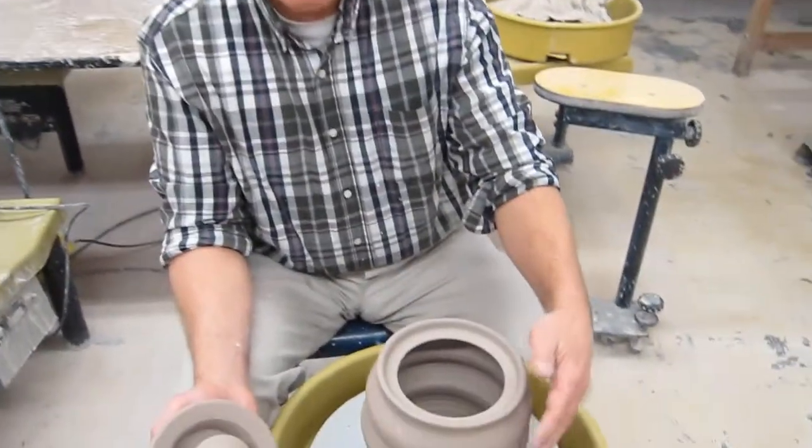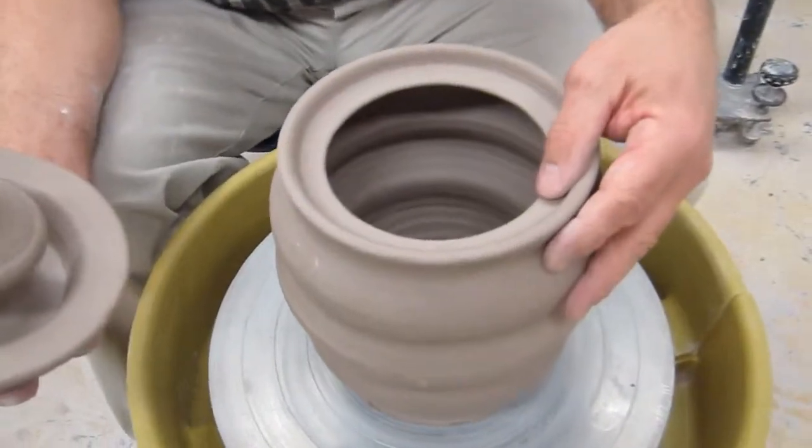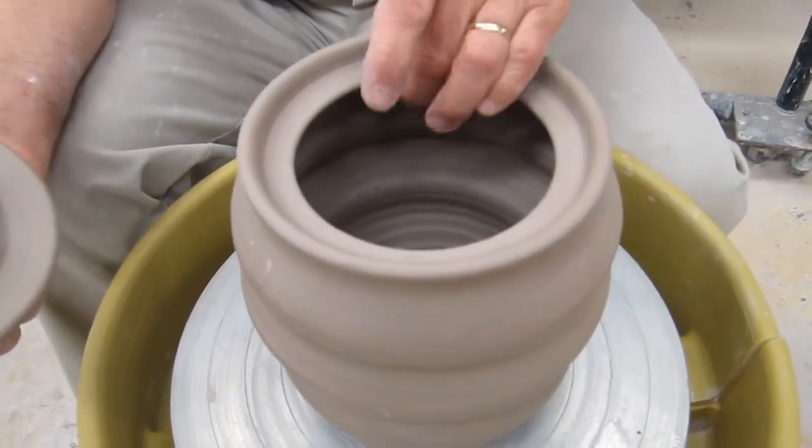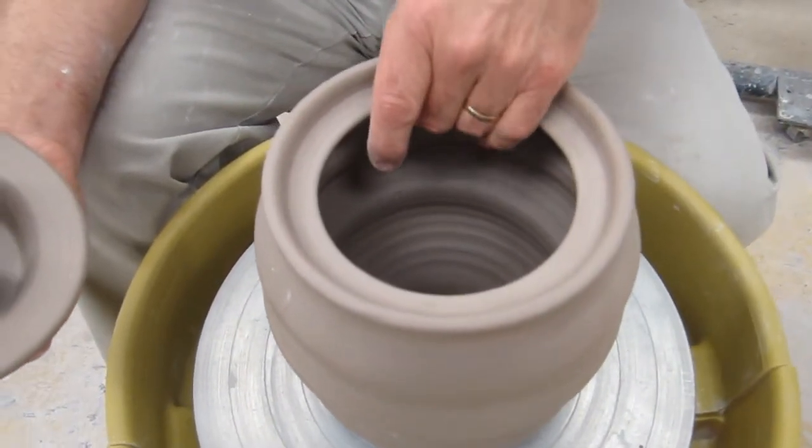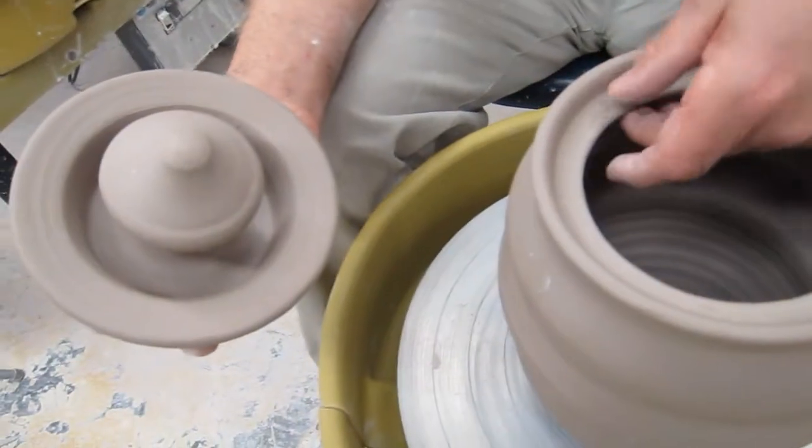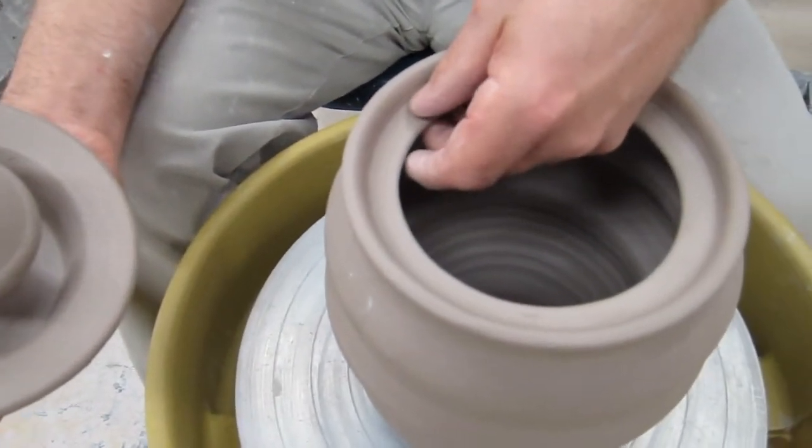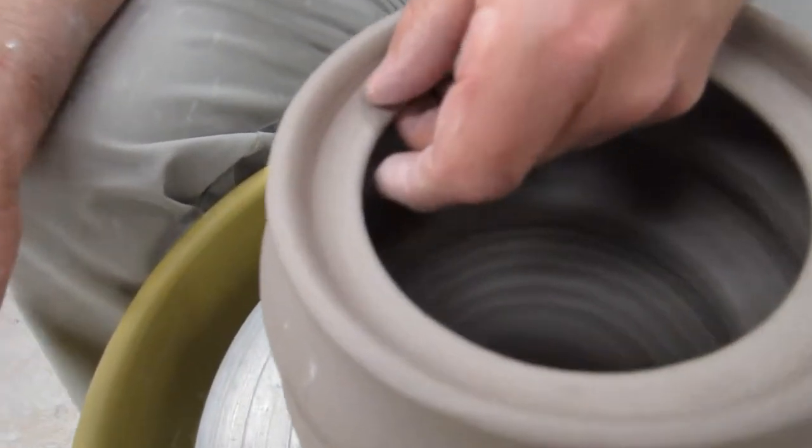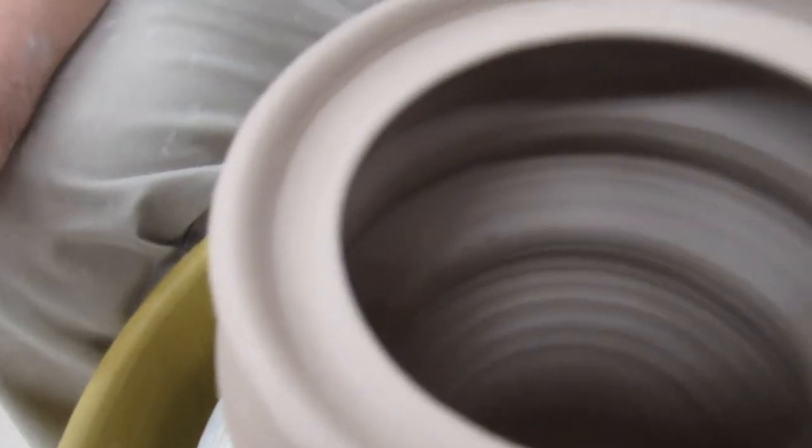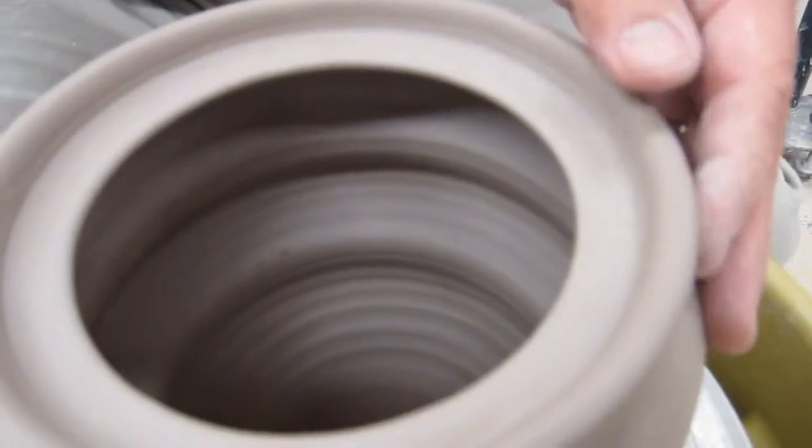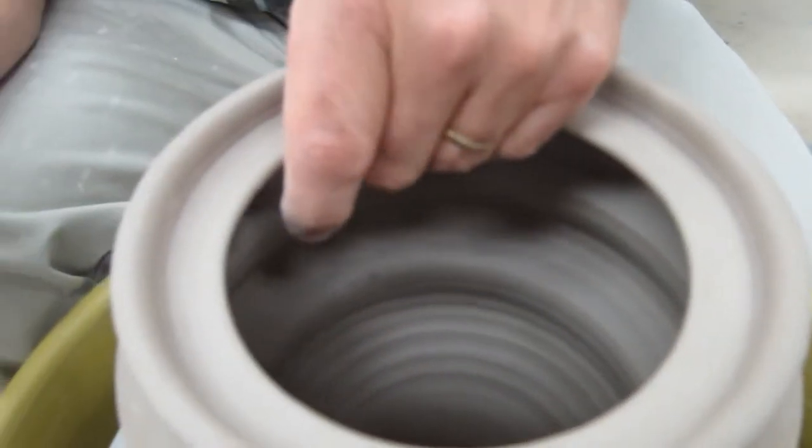Hi, we're now ready to trim our covered jar system. We've let it dry to a state that we call leather hard. One example of leather hard is brick cheese, so you can refer to leather hard as brick cheese consistency. There's still moisture in it but it's firm.